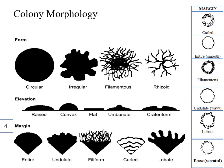The fourth characteristic is the margin. The margin of the colony might be crenated, entire or smooth — meaning a very smooth and rounded edge — it might have tiny projections which we call filamentous, it might be wavy, it might have a lobe-like shape which we call lobate, or it might be erose or serrated.